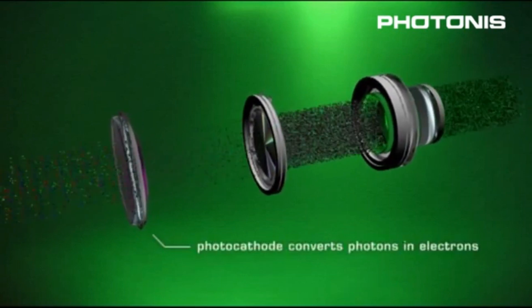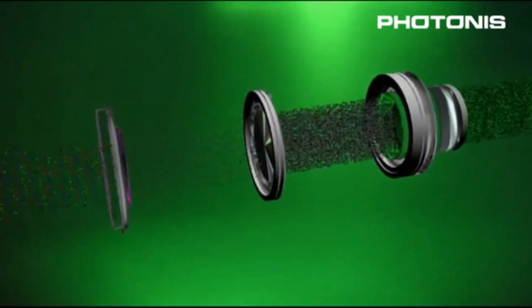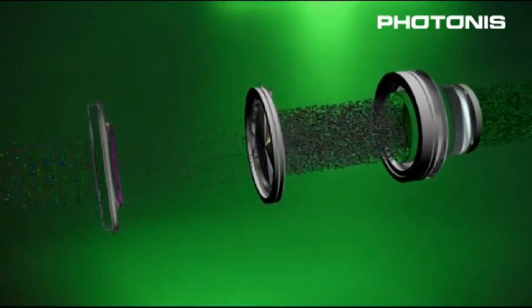Image intensifiers convert low levels of light photons into electrons, amplify those electrons, and then convert the electrons back into photons of light.